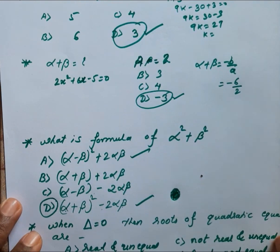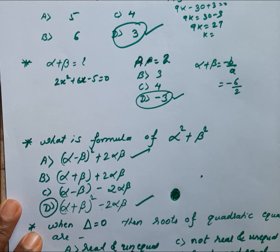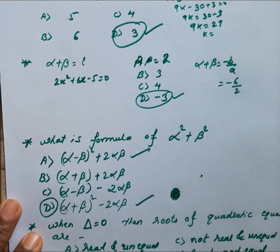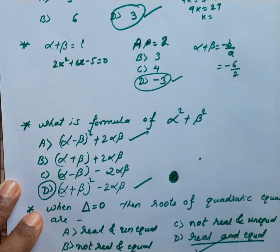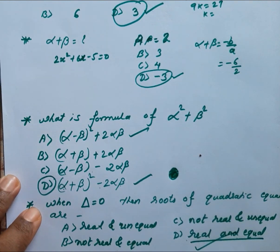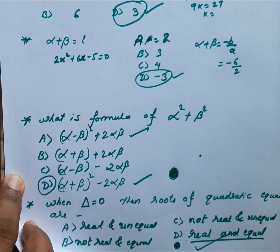Next question: when delta = 0, the roots of the quadratic equation are — real and unequal, real and equal, not real and unequal, or not real and equal? The correct answer is real and equal. Mark it in dark color.